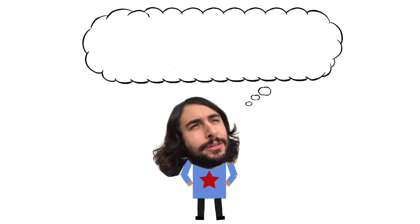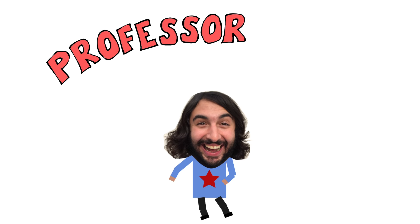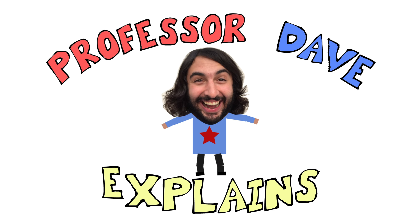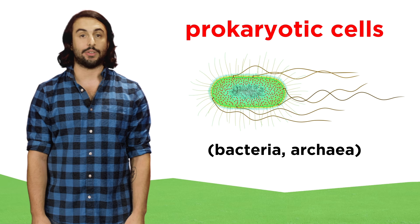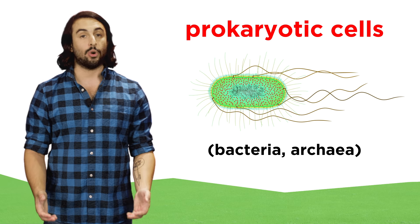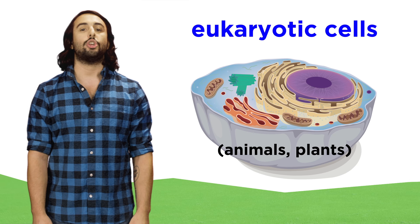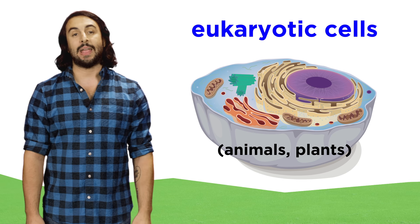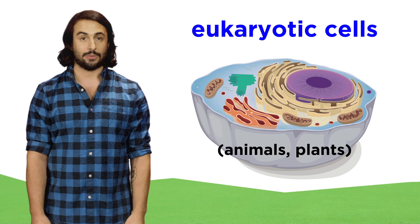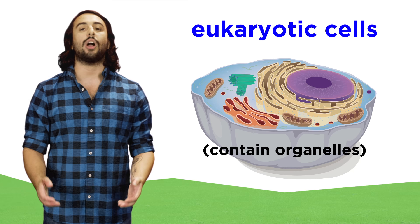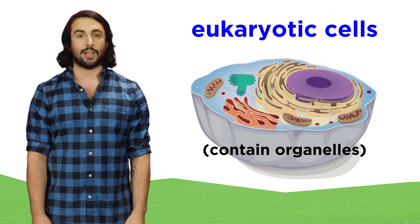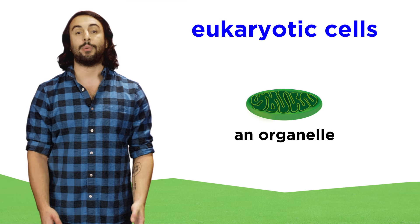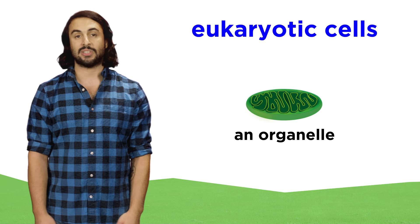Professor Dave here, let's talk about animal cells. We now know the basics about prokaryotic cells, but cells get much more complicated than this. Human beings and all other animals are made of eukaryotic cells, which contain a number of components called organelles that are not present in prokaryotic cells, some of which resemble individual organisms unto themselves.